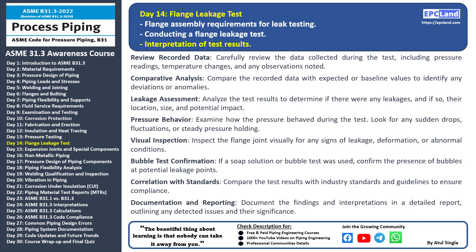Visual inspection: conduct a thorough visual inspection of the flange joint and check for any visible signs of leakage, deformation, or unusual conditions. Bubble test confirmation: if a soap solution or bubble test was employed, confirm the presence of bubbles at potential leakage points. Correlation with standards: compare the test results with industry standards and guidelines to ensure the system's performance aligns with expected parameters. Documentation and reporting: record your findings and interpretations meticulously in a comprehensive report.